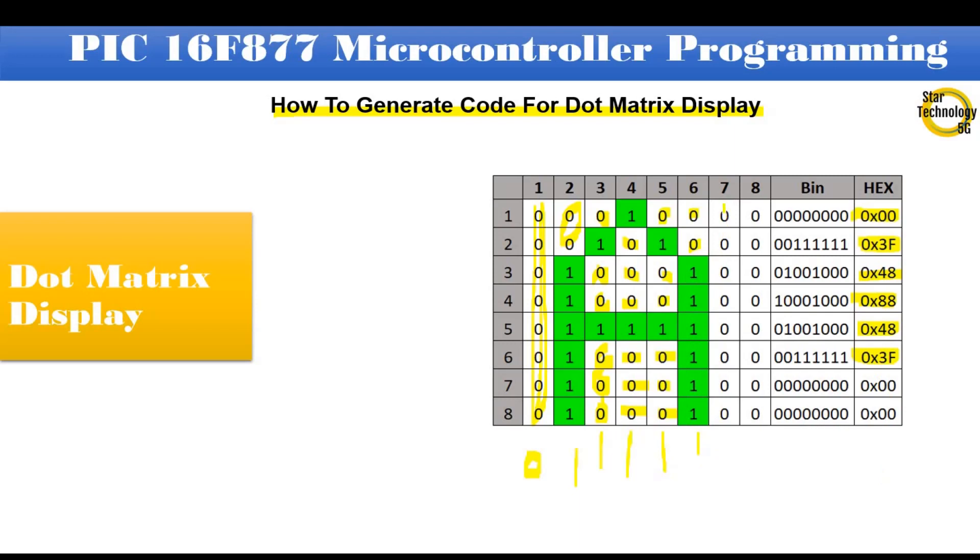All 8 rows in 7 column are off. We will send 0x00 code in row 7 and 0 in column 7. All 8 rows in 8 column are off. We will send 0x00 code in row 8 and 0 in column 8. We will send these codes one by one to dot matrix display and show character on it. That is same procedure we already have done in multiplexing.